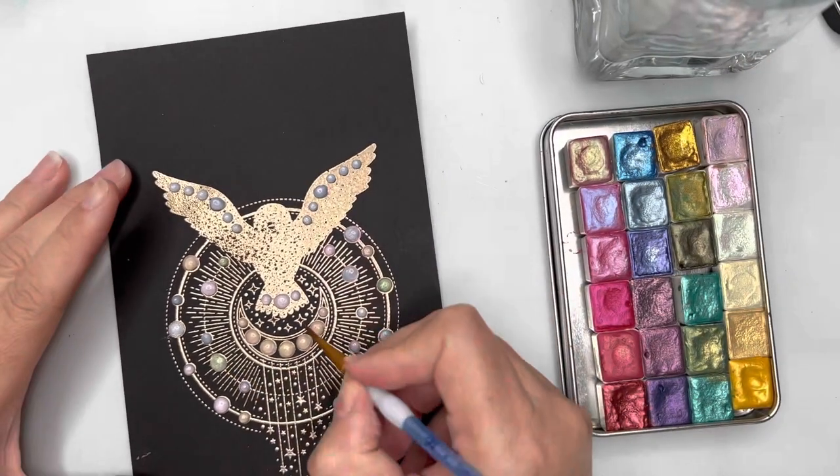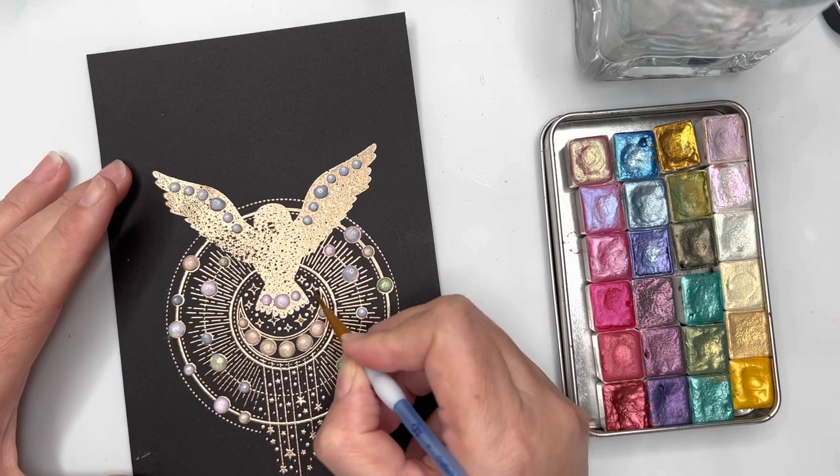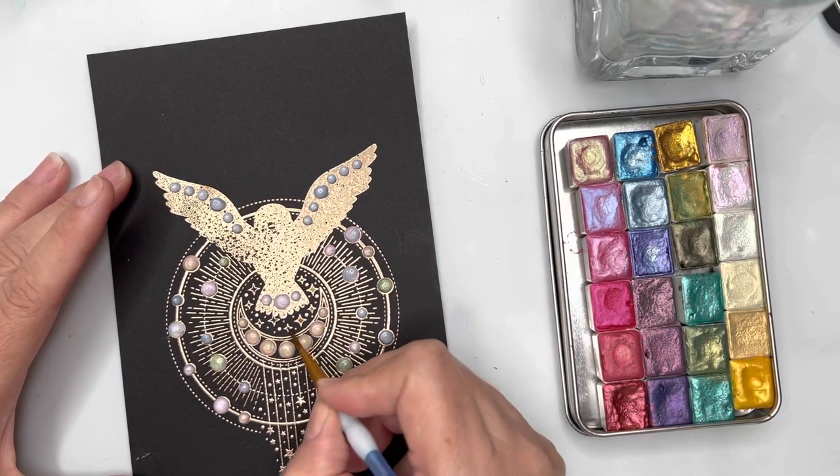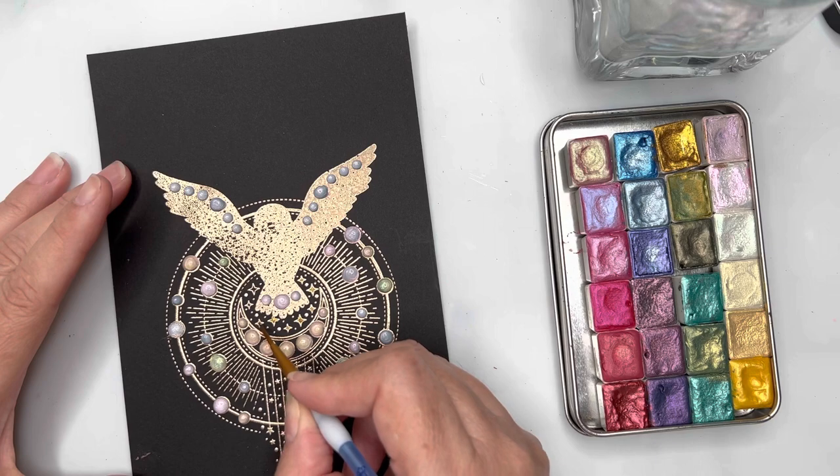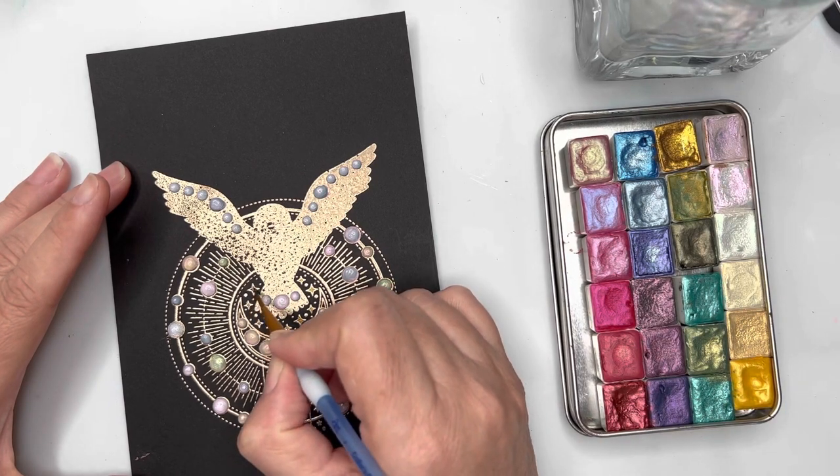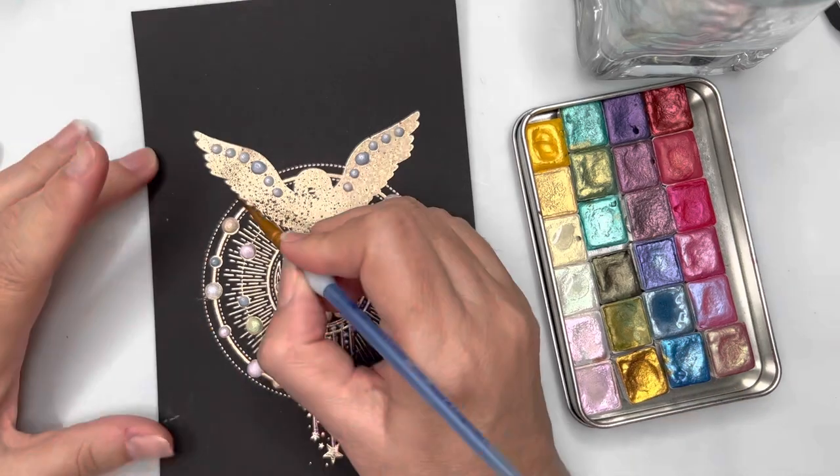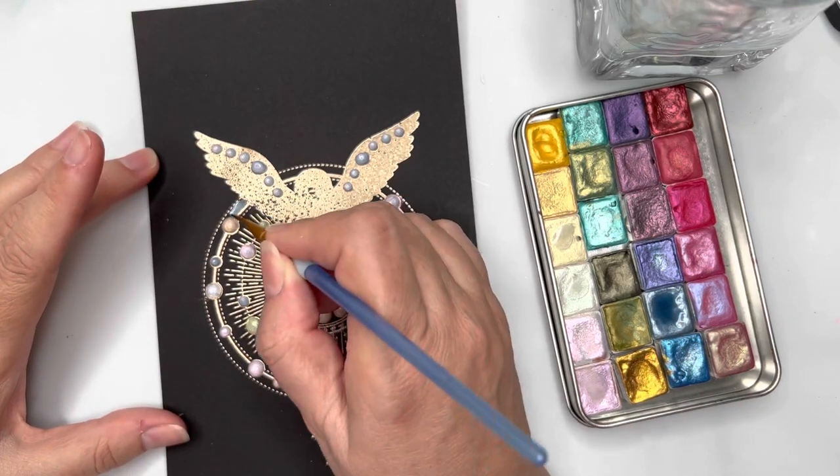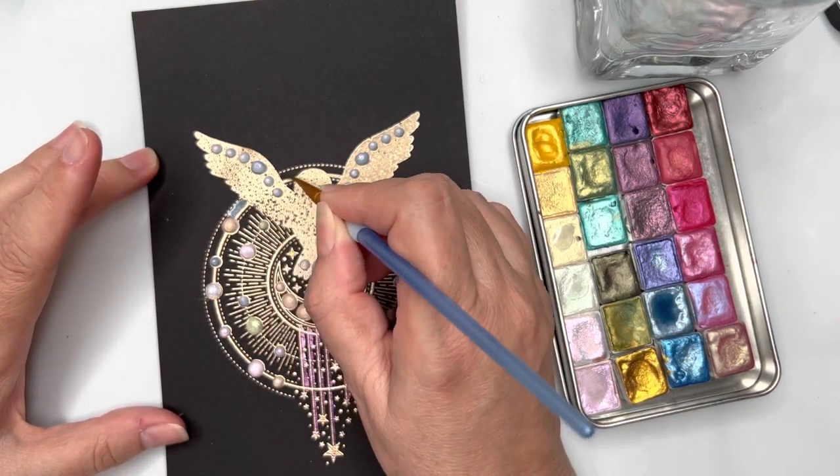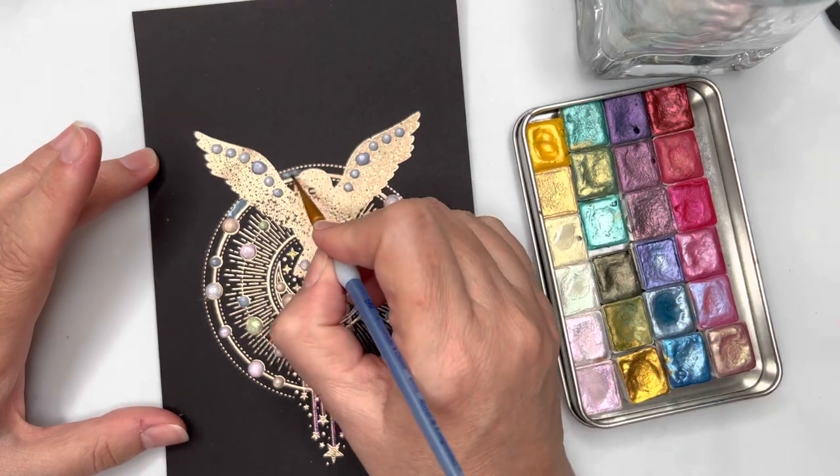I'm then going to go in and very carefully add some gold to the stars up underneath the owl, and then I'm going to come in with a little bit of the blue and I'm going to fill in that outer ring of the stamped image.